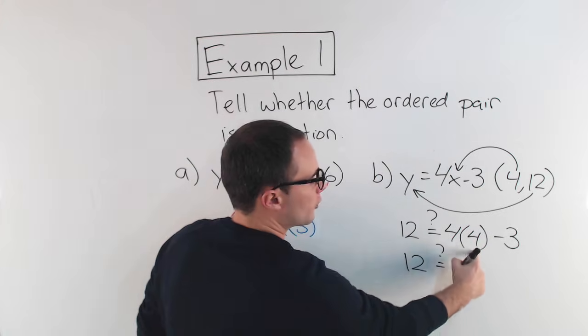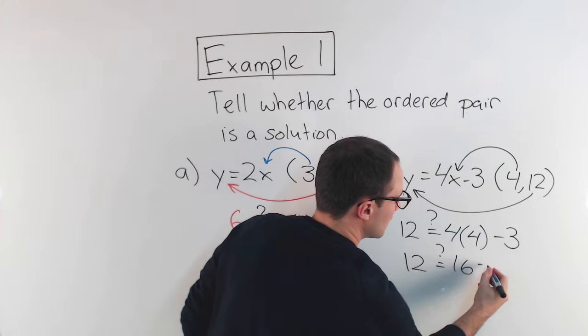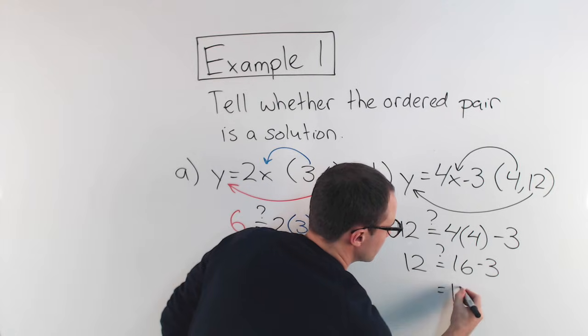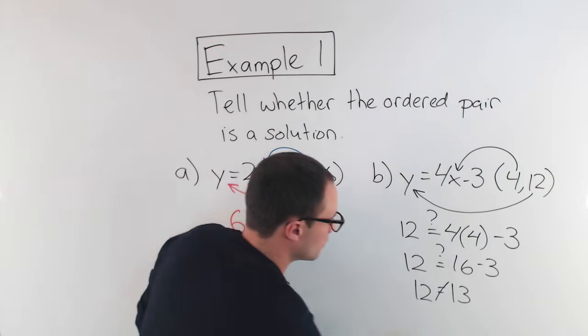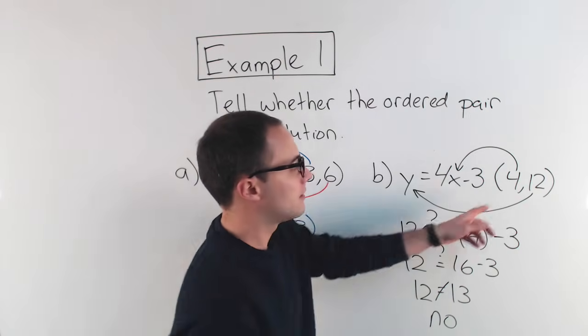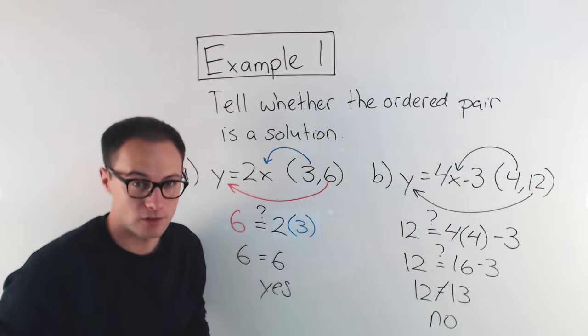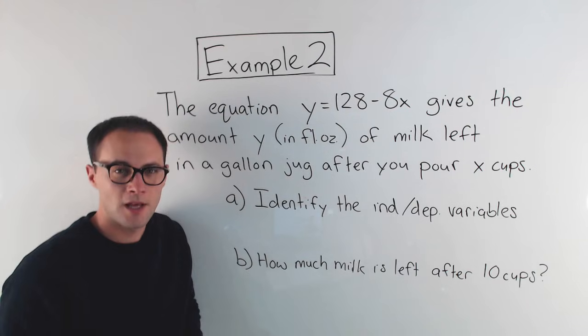12, is that equal to, well, 4 times 4 is 16 minus 3. 16 minus 3 is 13. So is that equal to 12? No, they are not equal, which means 4,12 is not a solution. Let's do another example.